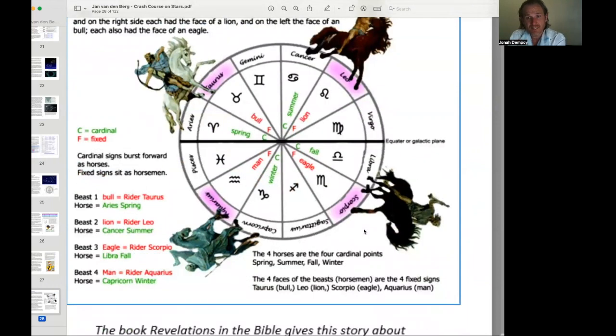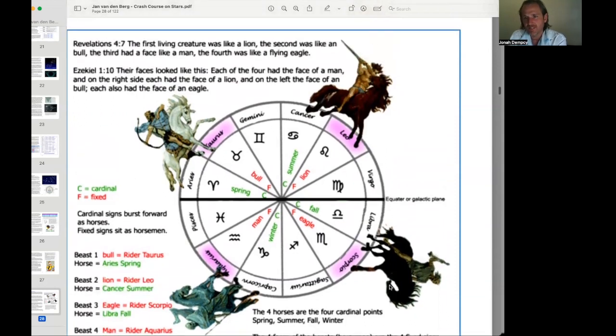And then the horse. The horse and the beast on the horse. Aries and Taurus. Cancer and Leo. Libra and Scorpio. Capricorn and Aquarius. The four horses are the four cardinal points. Spring, summer, fall, and winter. The four faces of the beasts, the horsemen, are the four fixed signs. Taurus the bull, Leo the lion, Scorpio the eagle, and Aquarius, the human being themselves.